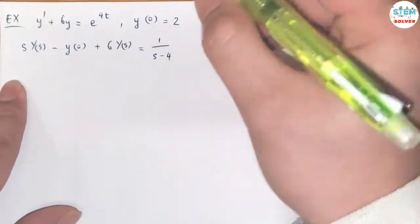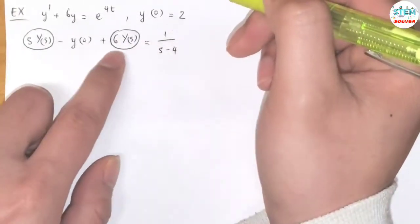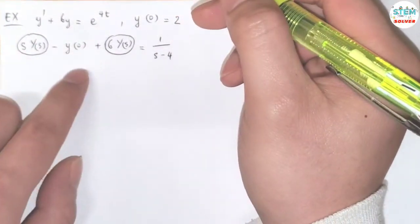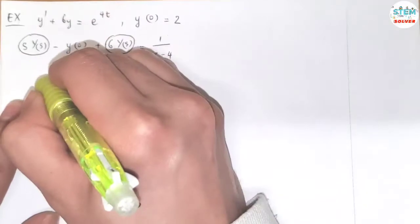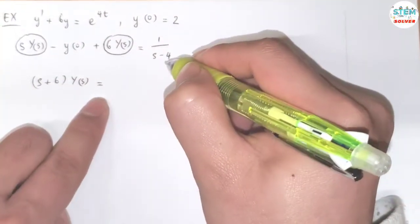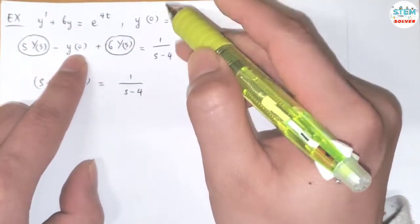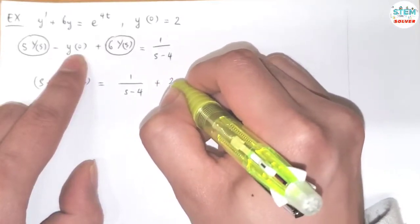So now I focus on this one, Y of S. Combine this together and factor out Y of S, I have S plus 6 times Y of S is equal to 1 over S minus 4. So you have negative Y of 0 and Y of 0 is 2, so you move it to this side, you have positive 2.